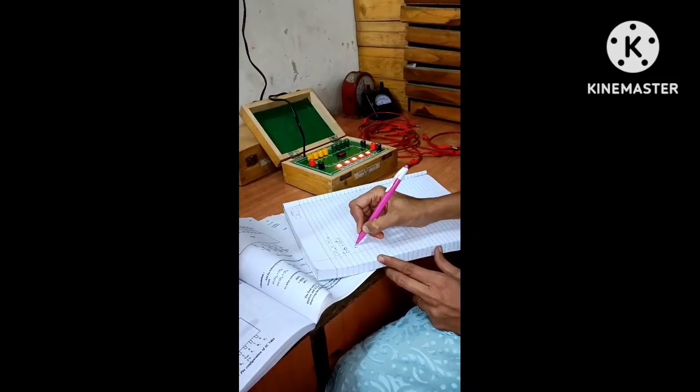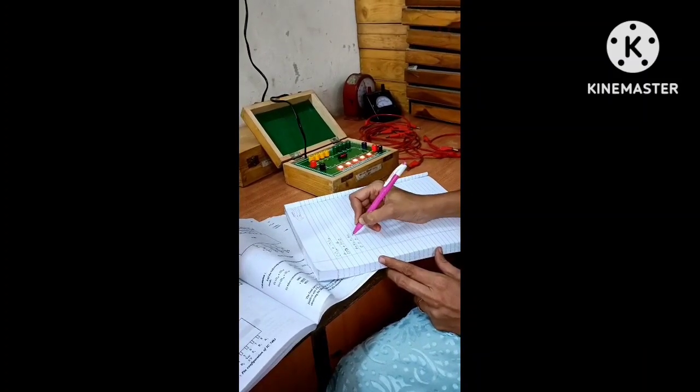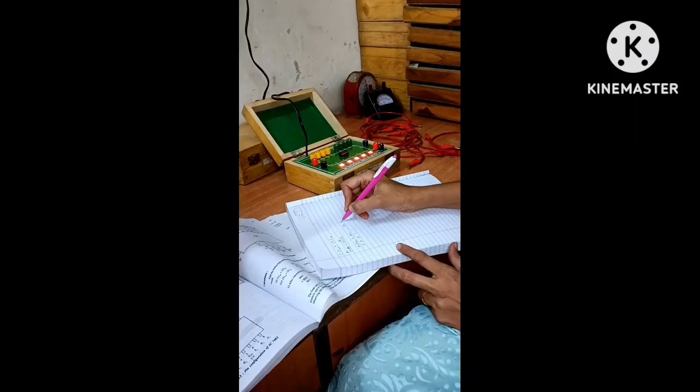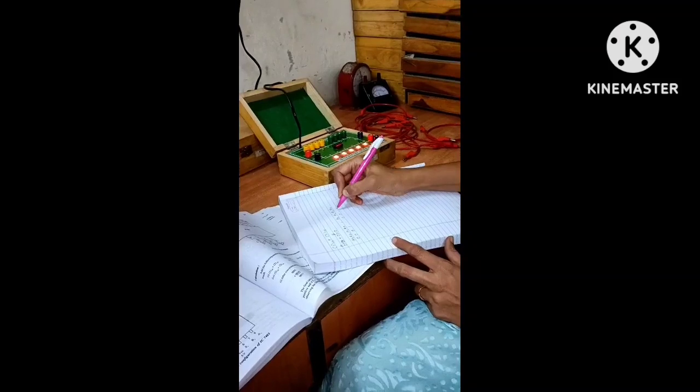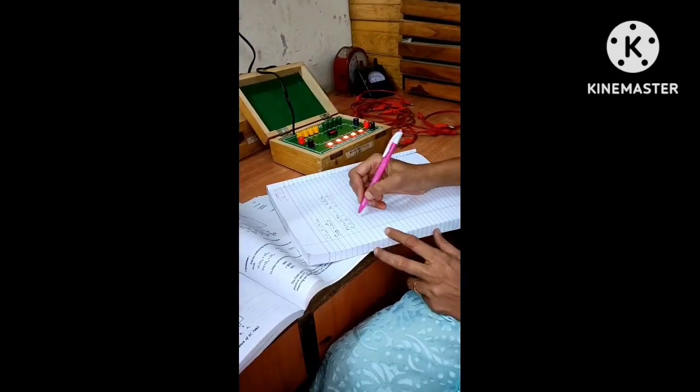So A3, A2, A1, A0 will be 0001, and B3, B2, B1, B0 will be 0010. Now we have to add these two binary numbers: 0001 plus 0010.